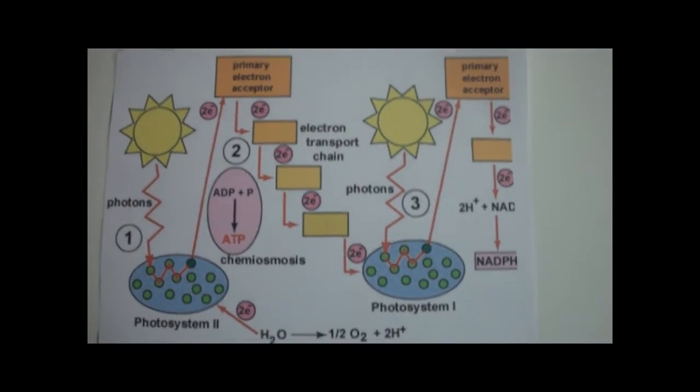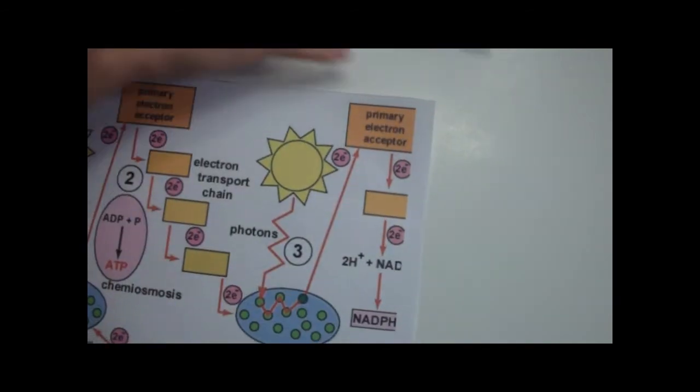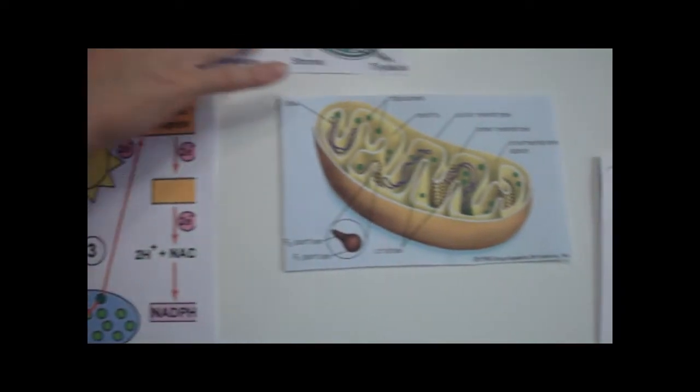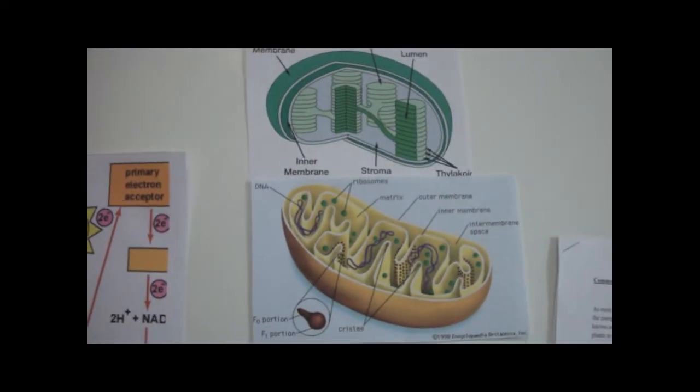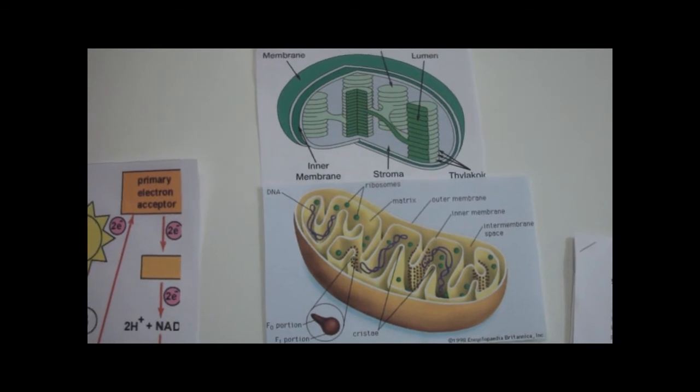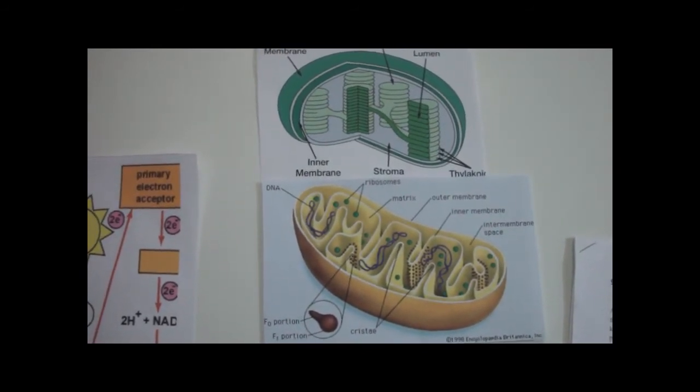There are remarkable similarities between light reactions in chloroplasts and respiration in mitochondria. In both, ATP is produced by creating a hydrogen gradient, which is used to run an ATP synthase protein that phosphorylates ADP into ATP.